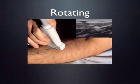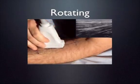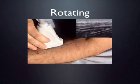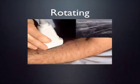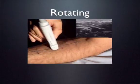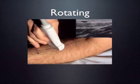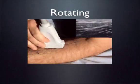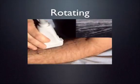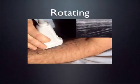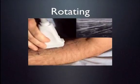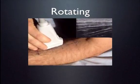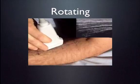Rotation involves holding the ring finger on the patient's skin to anchor the probe while rotating on one point. This converts the image from a short axis view of the forearm to a long axis view of the forearm, demonstrating how rotation changes the imaging plane of your target.